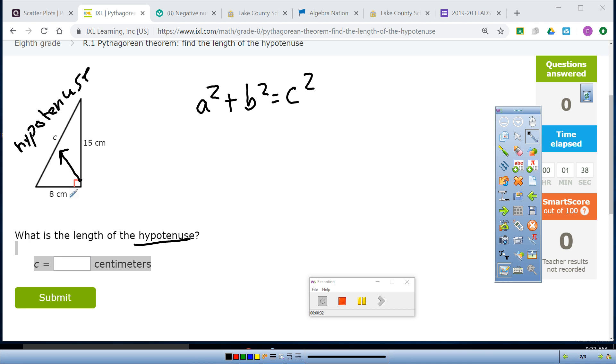So what we would do is we would take 8 and plug it in for A. We would take B, 15, and plug it in for B, and then I have C squared.